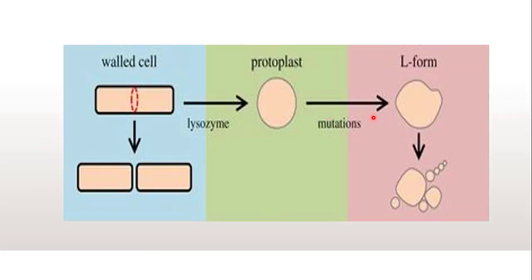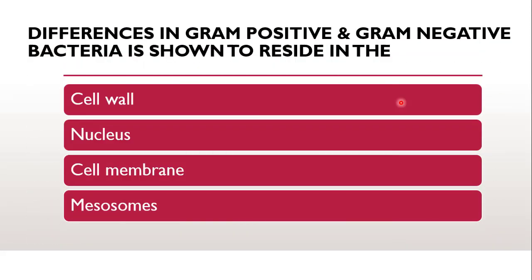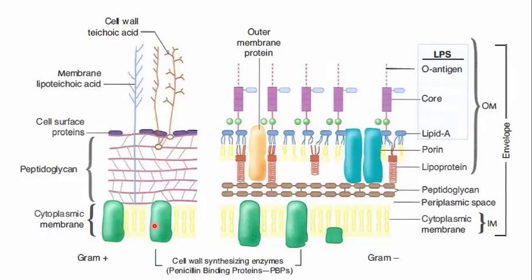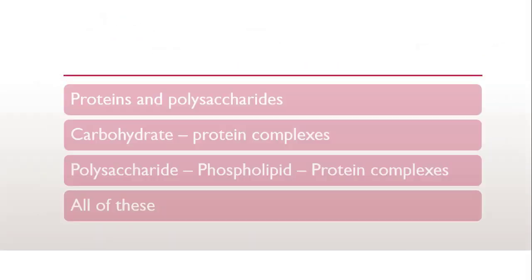When cell wall deficient forms are produced, they are L-forms. Next question: differences in gram-positive and gram-negative bacteria reside in — cell wall, nucleus, cell membrane, or mesosome? The correct answer is cell wall. The basic difference is in the cell wall — this is why gram-positives retain the primary stain and gram-negatives do not, instead catching the secondary stain safranin. Teichoic acid and more peptidoglycan are present in gram-positive; lipoprotein and lipopolysaccharide are more in gram-negative.